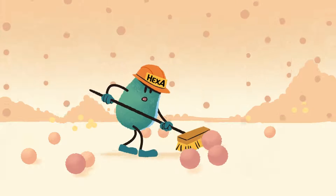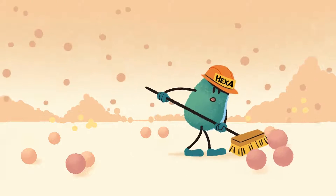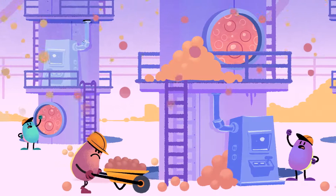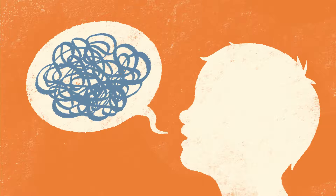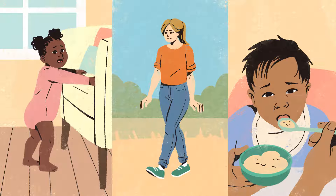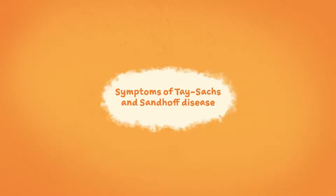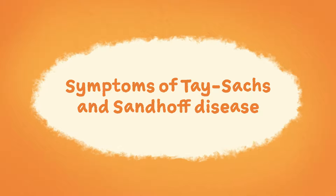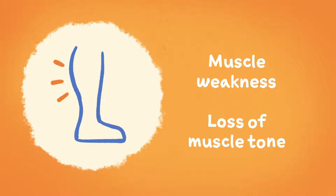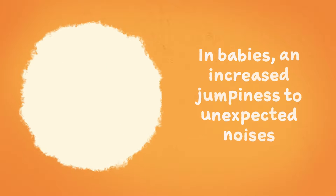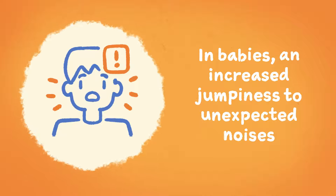This means GM2 can't be removed properly and it starts to build up until the factory — the brain — is unable to work as well as it should. This leads to problems with thinking and speaking. It also causes problems with movement of the body such as standing, walking, and eating. Common symptoms may include fits or seizures, muscle weakness and loss of muscle tone, particularly affecting the chest and stomach area, and increased jumpiness to unexpected noises.